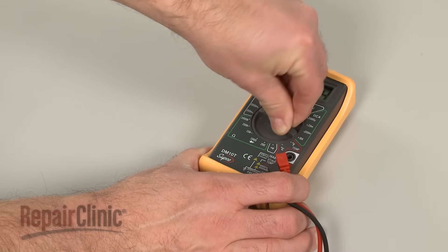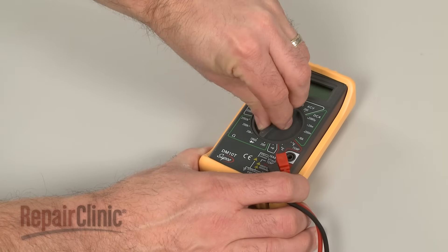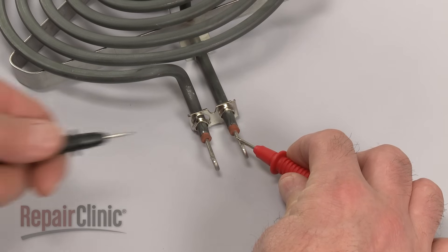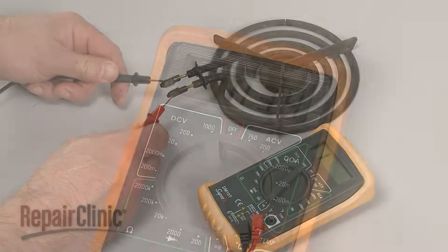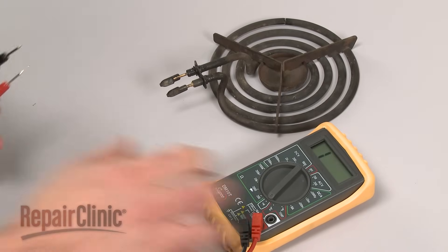You can also use a multimeter to test the element for continuity, a continuous electrical path present in the part. If the element tests negative for continuity, it will need to be replaced.